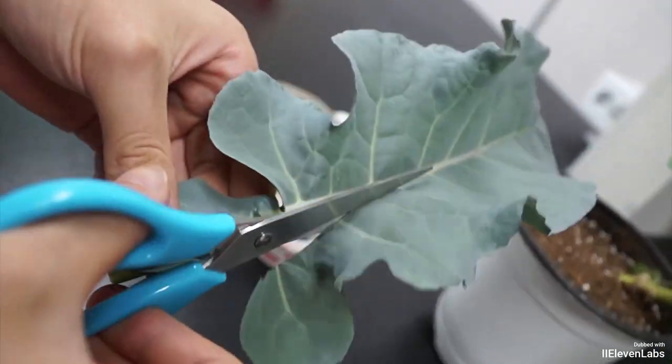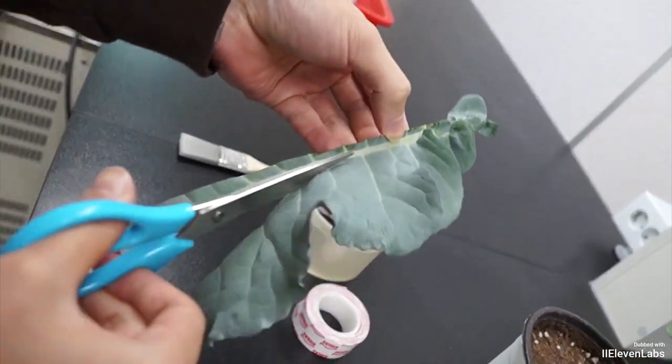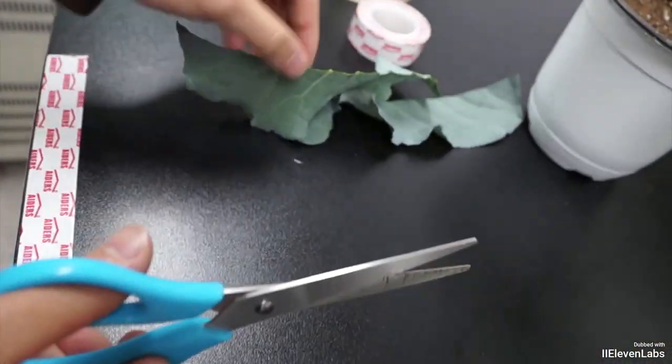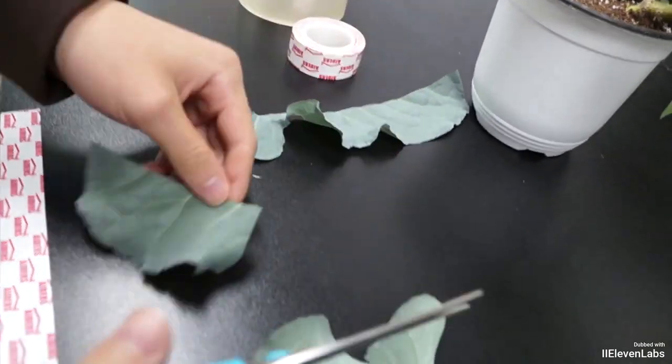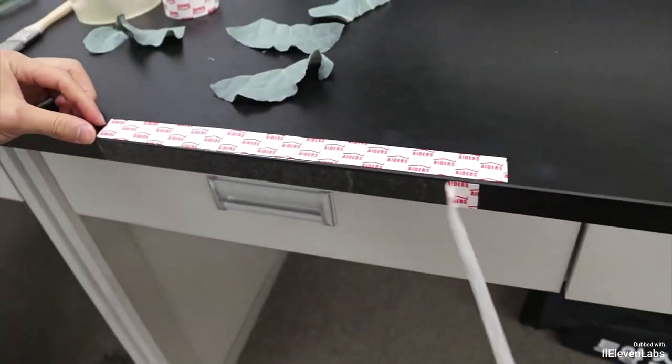First, take a broccoli with well-developed wax and carefully cut the flattest part, avoiding the veins of the leaves. Next, attach the cut broccoli leaves to the double-sided tape you prepared in advance.